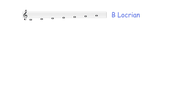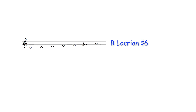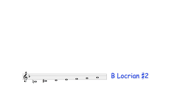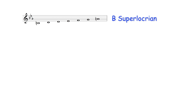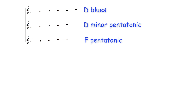The scalic or modal options for improvising over a B half diminished or B minor seventh flat five chord therefore include the B Locrian mode — the seventh mode of the C major scale — the B Locrian sharp sixth mode — the second mode of the A harmonic minor scale — the B Locrian sharp II mode — the sixth mode of the D melodic minor scale — the B superlocrian mode — the seventh mode of the C melodic minor scale — and the following blues and pentatonic scales.